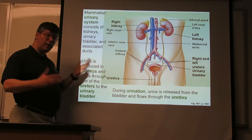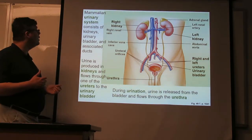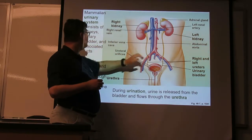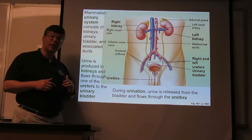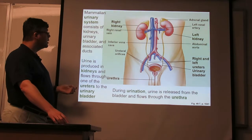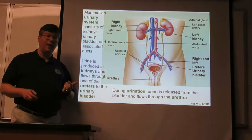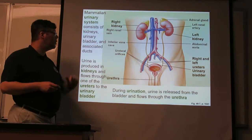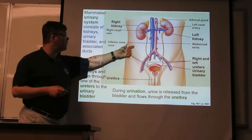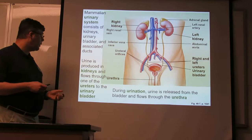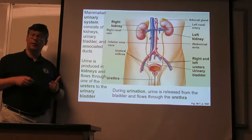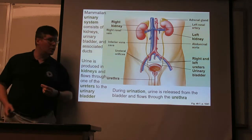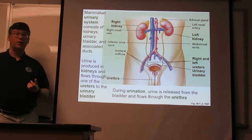In mammals, the basic parts of the urinary system are the kidneys, the bladder, and the associated ducts that carry the fluid. The kidneys actually make the urine, which then flows through one of the ureters — these tubes — to the bladder. And then from time to time, the urine is released from the bladder through the urethra.